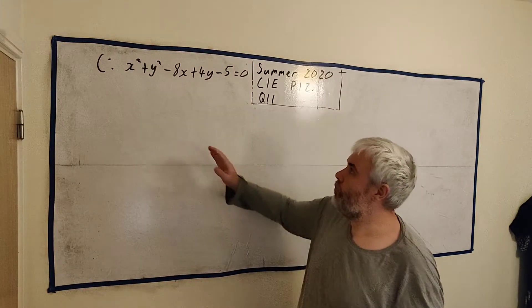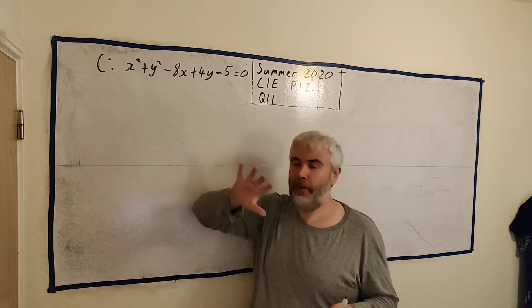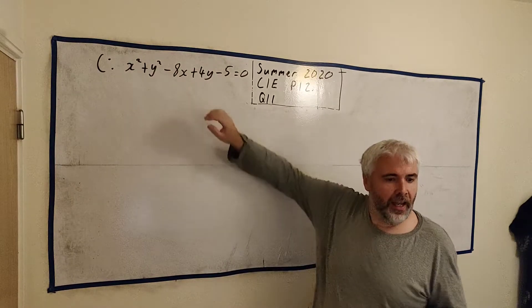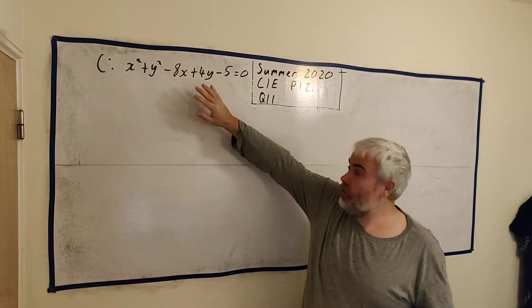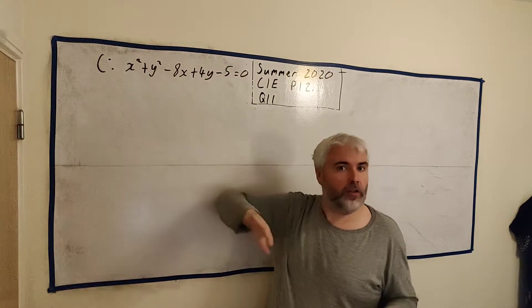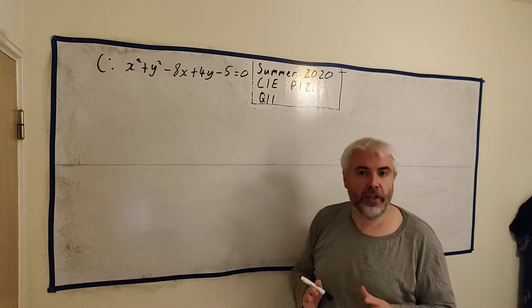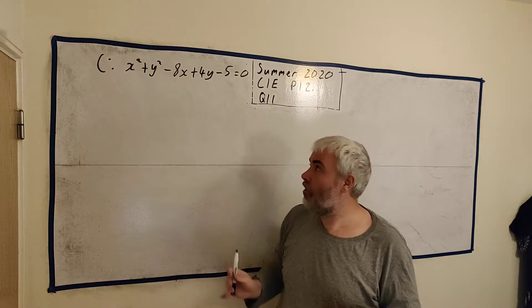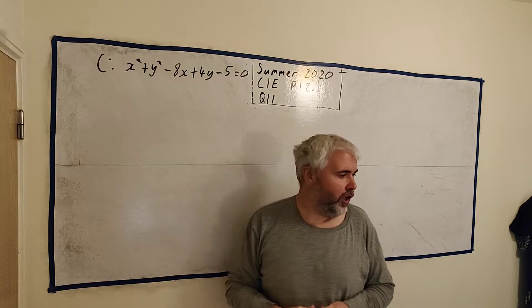Now this question all revolves around a circle, sorry for that pun. It gives us the equation of a circle. When you have the equation of a circle you know absolutely everything there is to know about a circle. You just need to know how to unlock it.